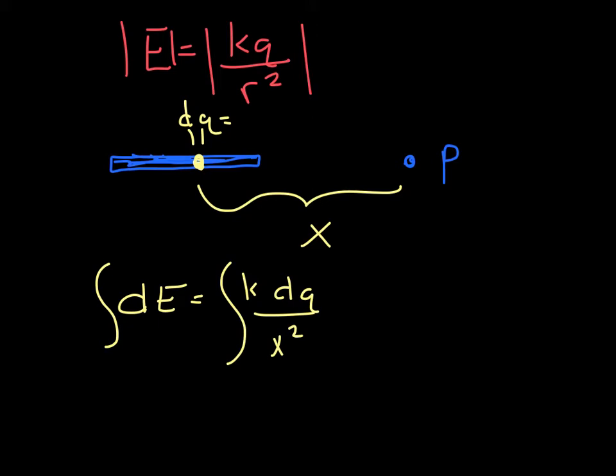So let's talk about what integration bounds we want to use. Well, in the problem, this was 0.2 meters. This was 0.1. So we want to integrate from 0.2 meters to 0.3 meters, so you cover this whole distance.